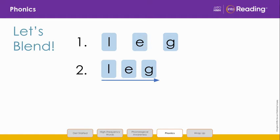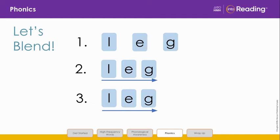Listen as I slowly blend each sound and then read the word: L, E, G — LEG. Now look at line 3 and blend the word with me: L, E, G — LEG. Good job!